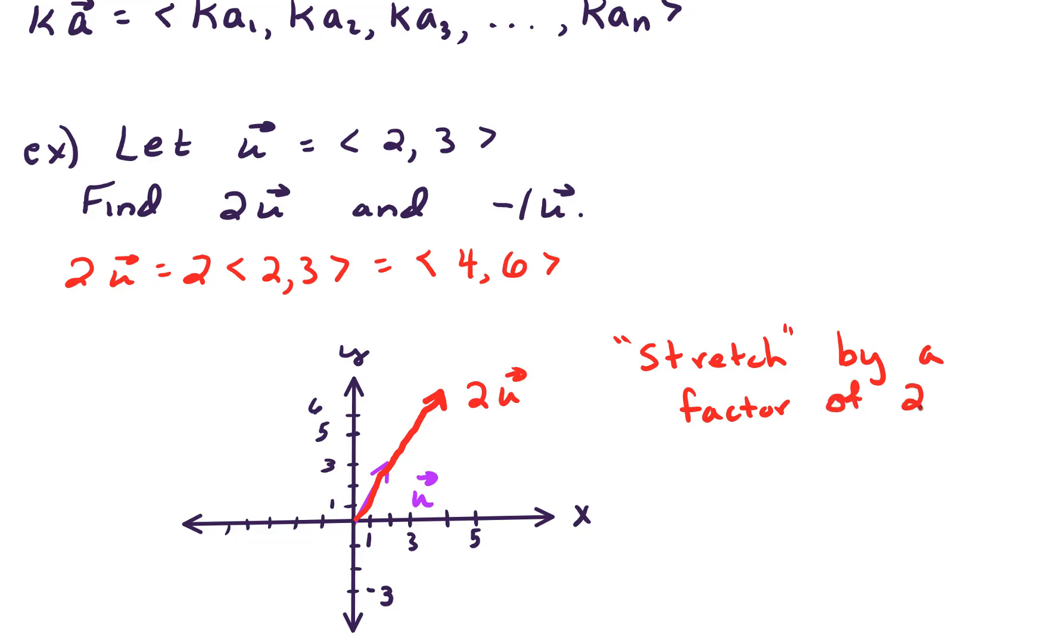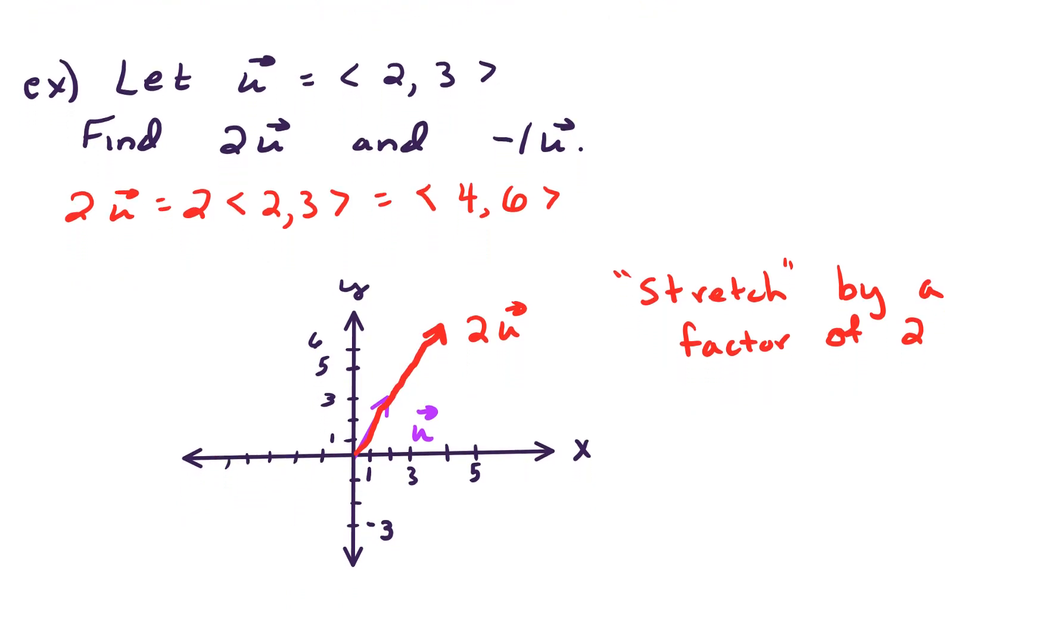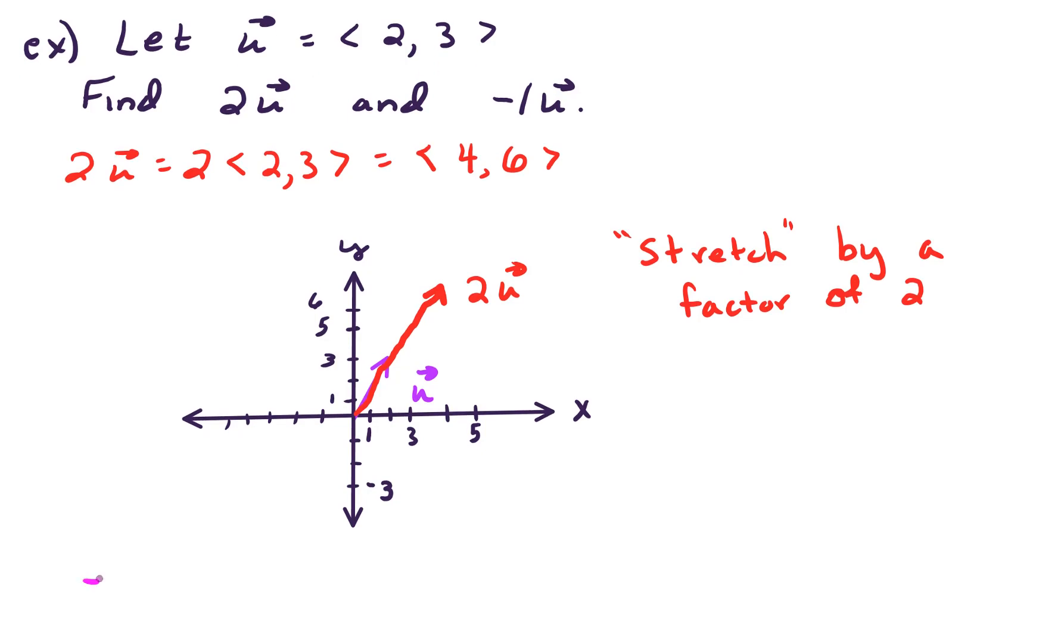It takes our original vector and stretches it or maybe squishes it if it's less than 1. Let's look at what negative 1u does to our vector. We've got negative 1 times vector u. That's negative 1 times the vector 2, 3. Each component gets multiplied by negative 1. So our answer looks like negative 2, negative 3. If we plot that on the screen, we would go negative 2, negative 3. We end up on the same line. It's just being stretched now in the other direction. We're shooting through the origin. That's what the effect of the negative sign had.